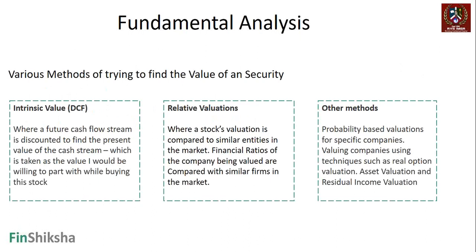The first method basically tries to identify what is the return you're going to generate from a particular stock — what you're going to get in terms of future cash flow streams — and you try to find the present value of that, similar to the net present value approach. What we're trying to do is find what is called the intrinsic value.